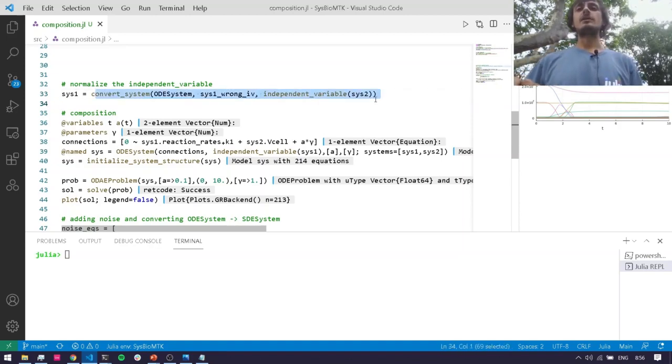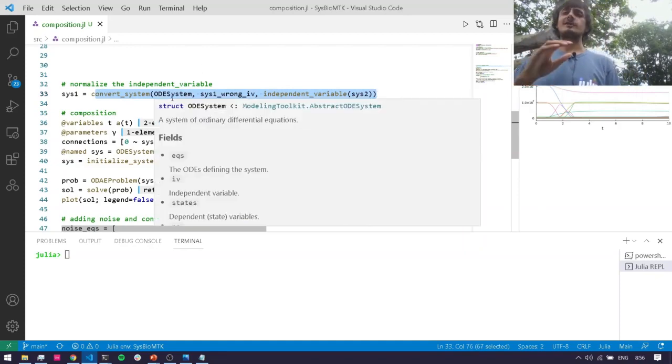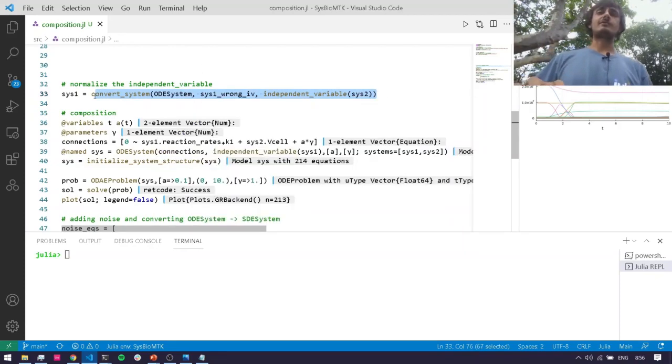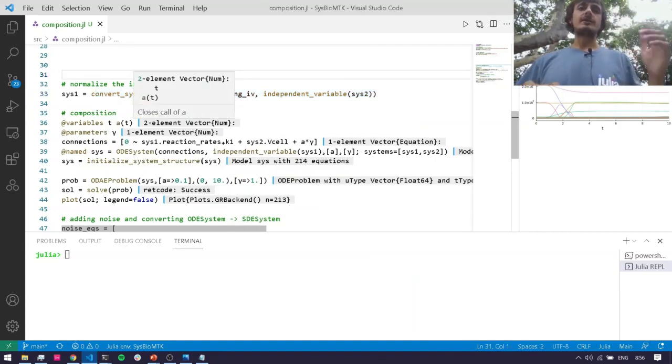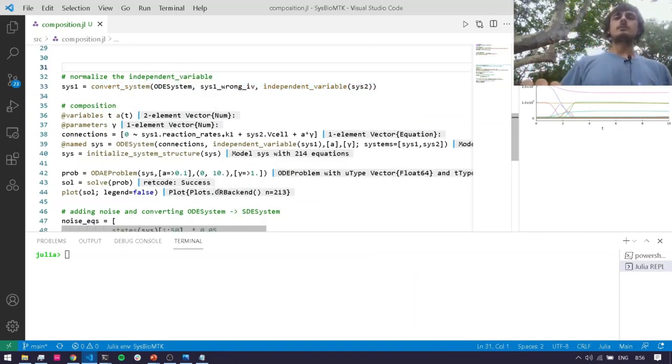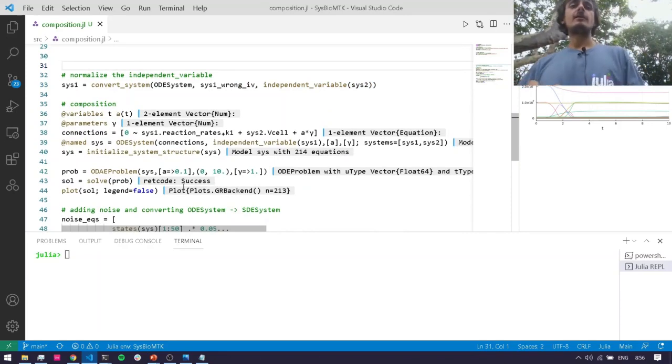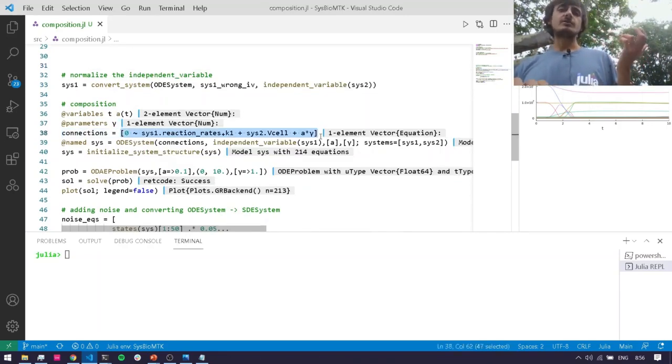Now one nice thing is that I actually had the wrong independent variables—you know, they didn't match up. Luckily, modeling toolkit has got me covered, so I just convert the system. Now I have a uniform independent variable and the whole thing is able to be composed together. Then I define some equation that composes the models together and I create a new model with the systems, and I have now some model that's twice as big.